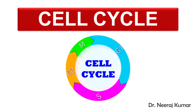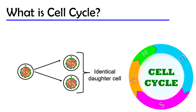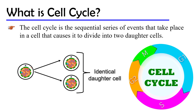Hello everyone, today I will discuss the cell cycle and its phases. The cells in our body divide to maintain their population. In order to divide, they follow certain sequential events or steps that prepare the cell to divide, ultimately making it divide into two daughter cells. These sequences are called the cell cycle.